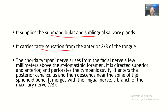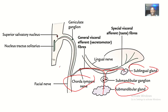The Chorda Tympani also carries taste sensation from the anterior two-thirds of the tongue. The Chorda Tympani arises from the facial nerve a few millimeters above the stylomastoid foramen — it is given off before the facial nerve actually exits the stylomastoid foramen. So it branches a few millimeters before that exit point.